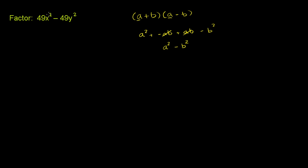49x squared is a perfect square. 49y squared is a perfect square. We can rewrite it like that. We could rewrite this over here as 7x squared minus 7y squared. And so you see it's a pattern. It's a squared minus b squared.